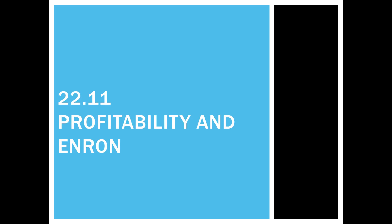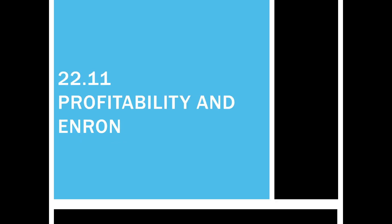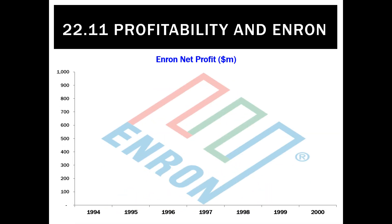We now have four profitability ratios in our arsenal that we can use to analyze and interpret the results of any business. Let's apply them to Enron up until its collapse in 2001.